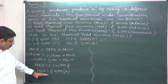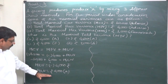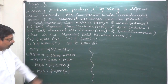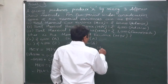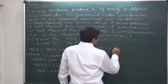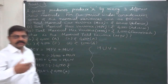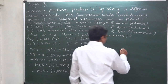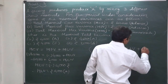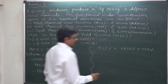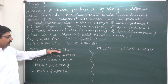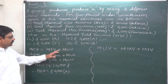We have found the material usage variance, but we want to find the material yield variance. We use the second reconciliation formula: total material usage variance equals material mix variance plus material yield variance.